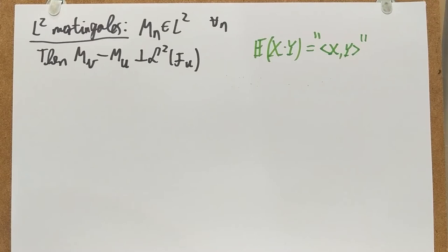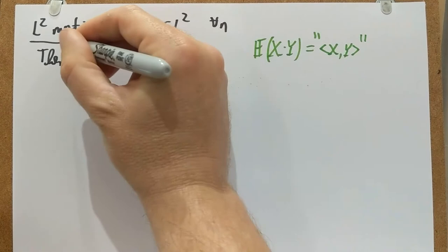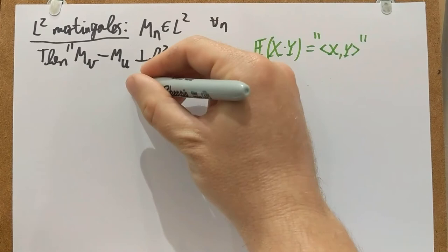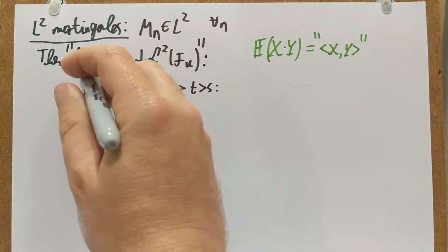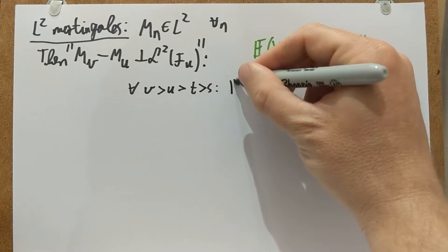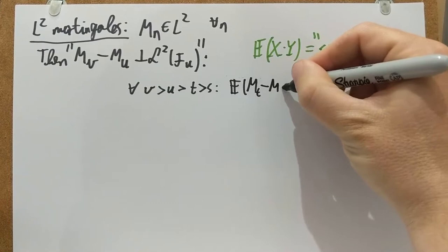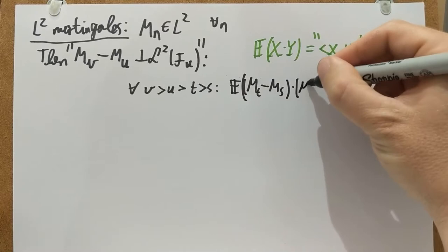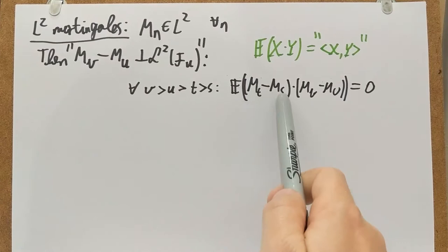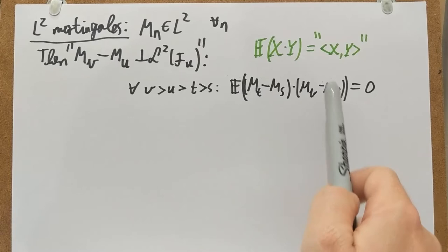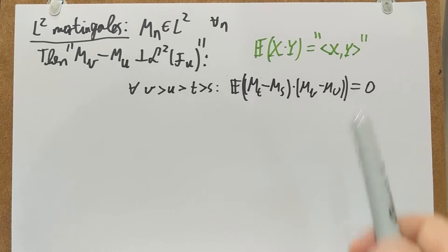In that sense, we can talk about orthogonality. What I mean by that concretely is: for every V larger than U larger than T larger than S, the following is true. Look at the expected value of the increment MT minus MS multiplied by the increment MV minus MU — what you get is zero. In that sense, the increment from S to T and the increment from U to V are orthogonal, meaning the scalar product, or expectation of the product, is zero.